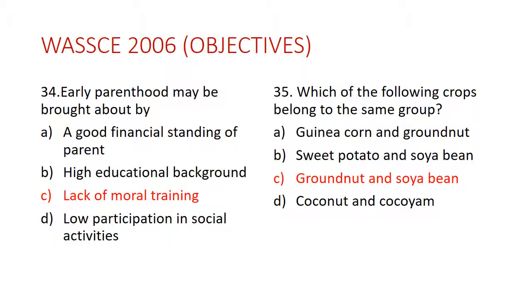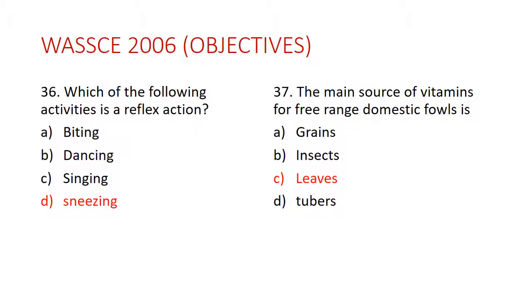Question 35: Which of the following crops belong to the same group? The answer is C — groundnut and soybean. They are both legumes. Guinea corn and groundnut are not in the same group; sweet potato, coconut, yam, and cocoyam are not in the same group either. The answer is C.